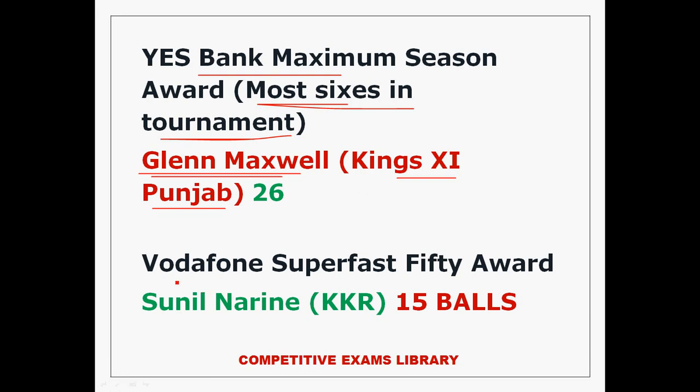Vodafone Superfast 50 Award — the fastest half century in IPL 2017 was scored by Sunil Narine, a Kolkata Knight Riders player, who completed his fifty in just 15 balls.